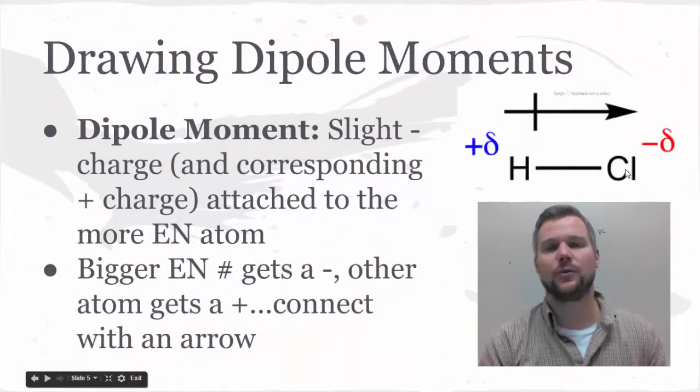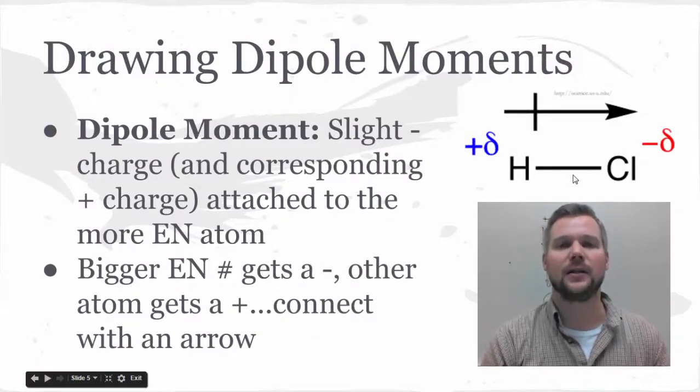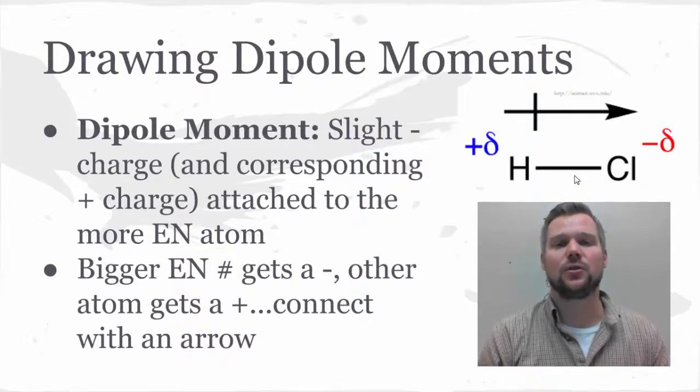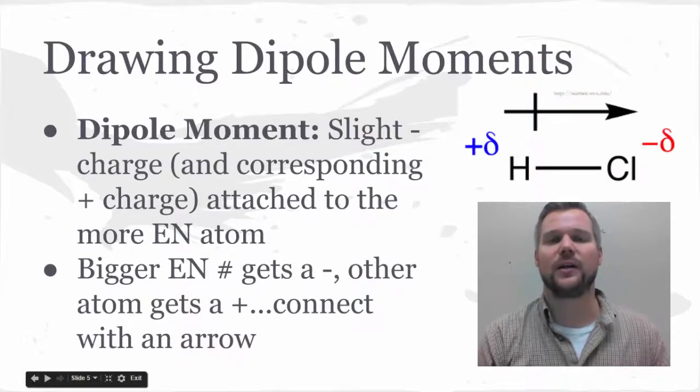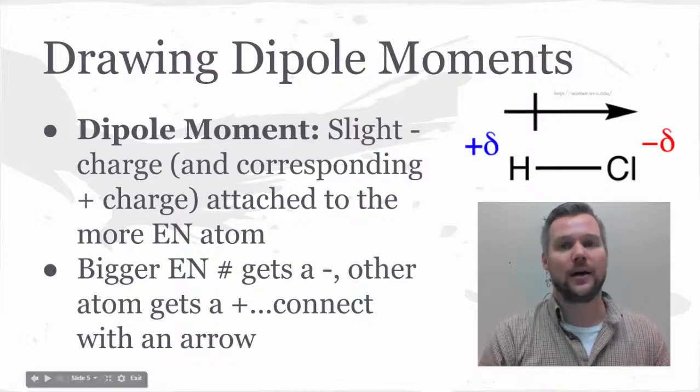After watching this video, you should have learned about the electronegativity definition of bonding and the values that cause a polar, nonpolar covalent, or an ionic bond. You should have also refreshed your idea of what electronegativity is, and you should know how to draw a dipole moment. Hope that helps.